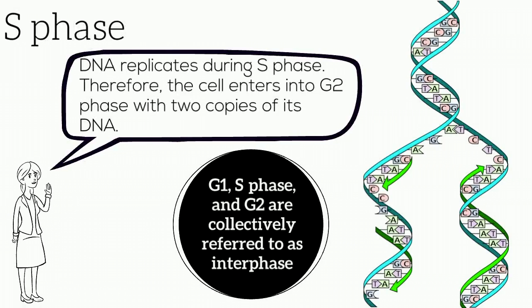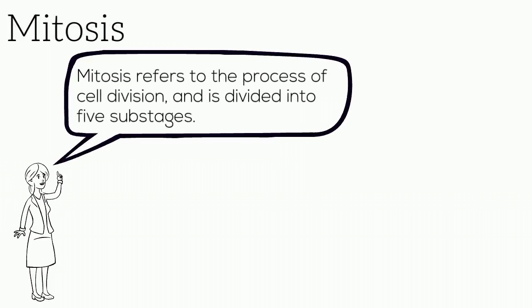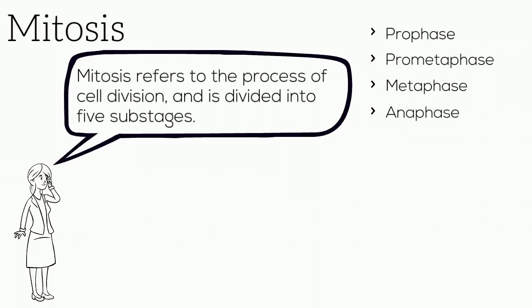G1, S phase, and G2 are collectively referred to as interphase. Mitosis refers to the process of cell division and is divided into five sub-stages: prophase, prometaphase, metaphase, anaphase, and telophase.